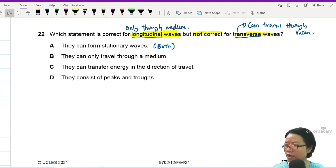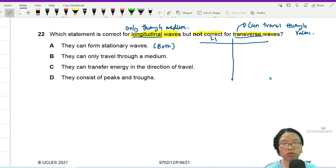So think a little bit about the question here. It says that it is correct for longitudinal wave but not correct for transverse wave. So think about the statement. Longitudinal wave can only travel through the medium. Yes, so if you are the type where all these statements are not something that you're used to, you can do longitudinal wave here, transverse wave here. They can form stationary wave. Both can form stationary wave. This statement is correct for both. So the answer is not this one.